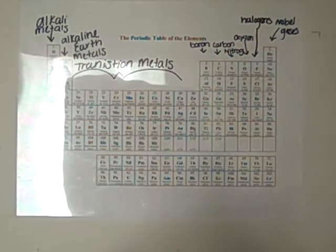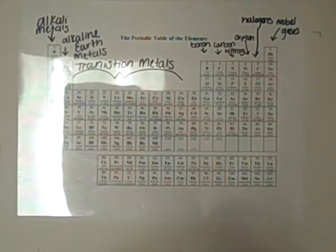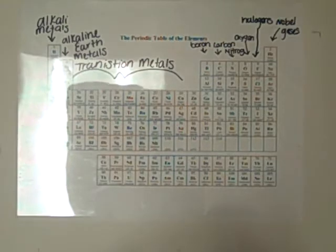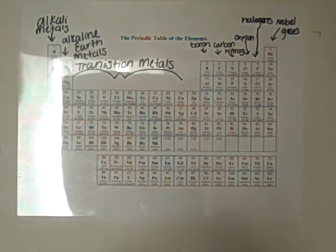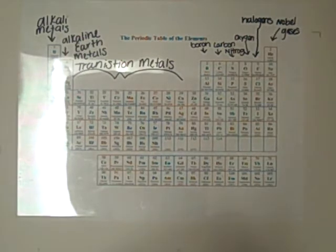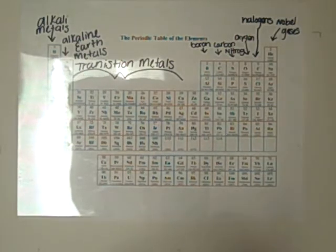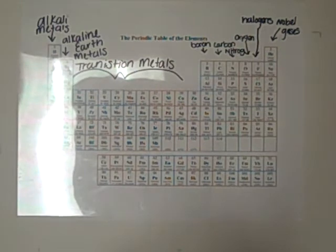So lithium would have 1 valence electron in the valence shell. The different groups are alkaline metals, alkaline earth metals, transition metals, boron, carbon, nitrogen, oxygen, halogens, and noble gases.